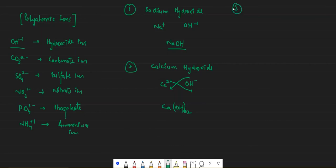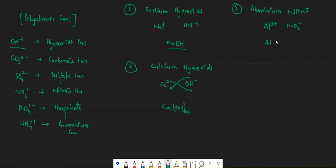Let's do aluminium nitrate. Aluminium has a plus 3 charge and nitrate is NO3 minus 1. So 3 goes here and 1 goes here. This 3 will be multiplied with the whole NO3 group, so it goes in brackets: Al(NO3)3. That means nitrogen is 3 and oxygen is 3 multiplied by 3, which gives 9 oxygen atoms.